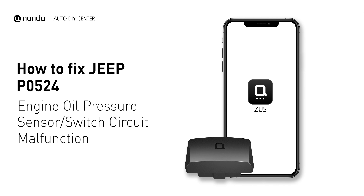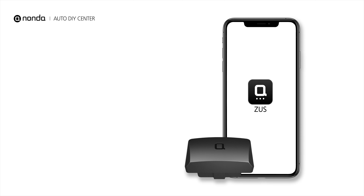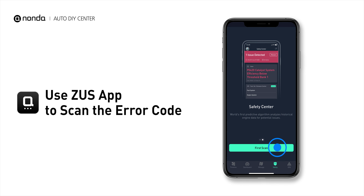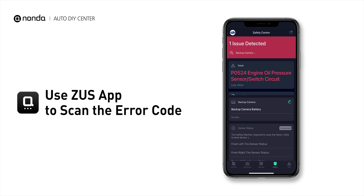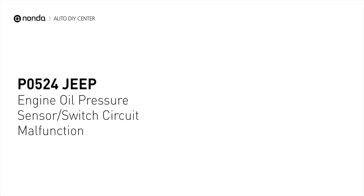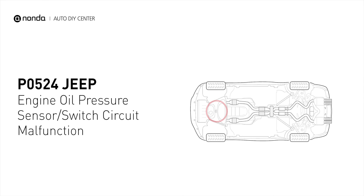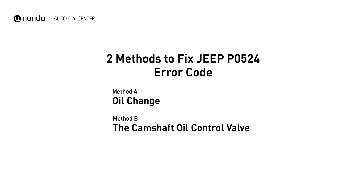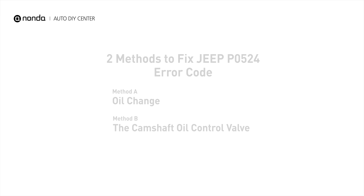This P0524 repairing video is dedicated to Jeep drivers. If your Jeep is getting a P0524 error code, this video is going to show you two practical solutions to fix the error code at home. Use the Zeus app to scan your vehicle and see the error code P0524. It indicates that the engine computer reads a signal from the sensor that is either too high or too low in relation to the manufacturer's parameters. Here are two of the most practical solutions to fix Jeep's P0524 error code.